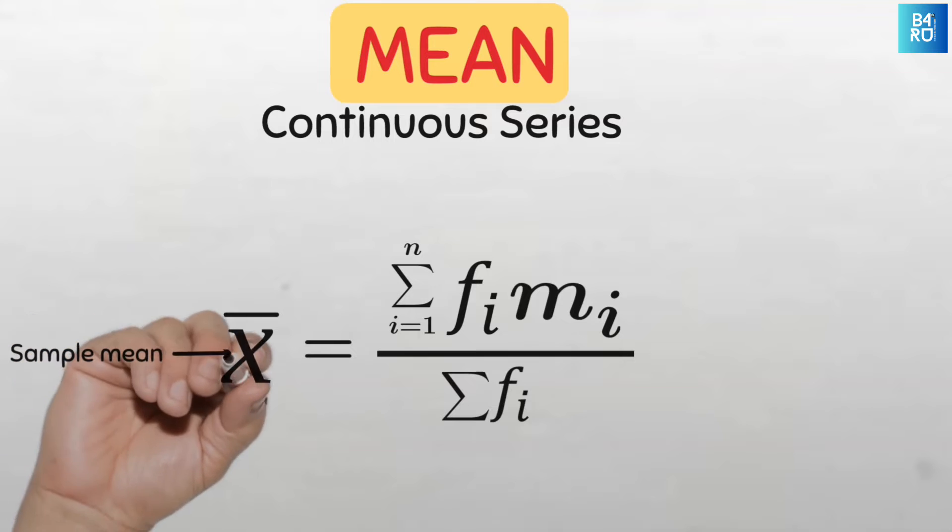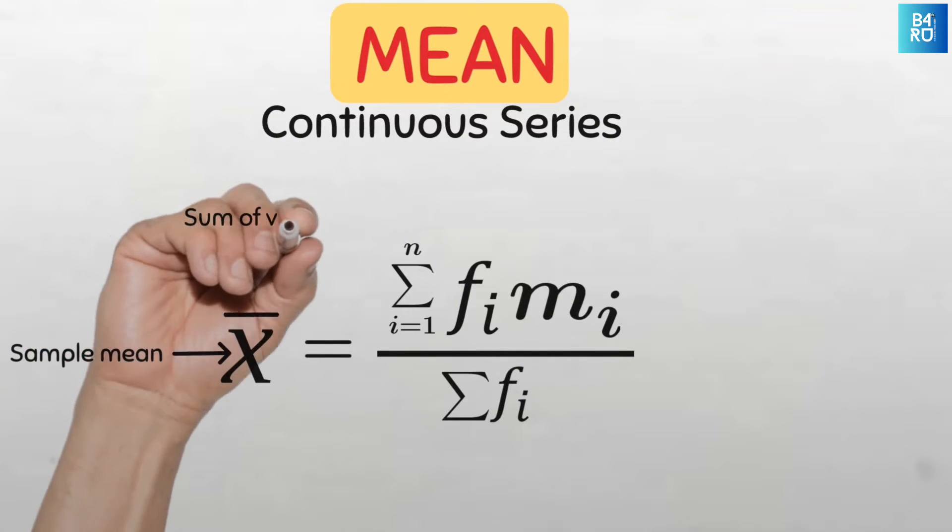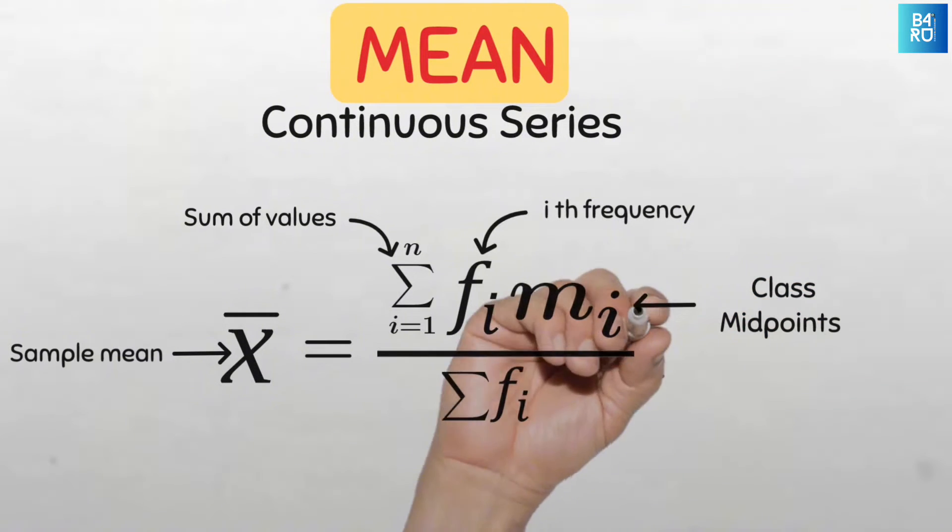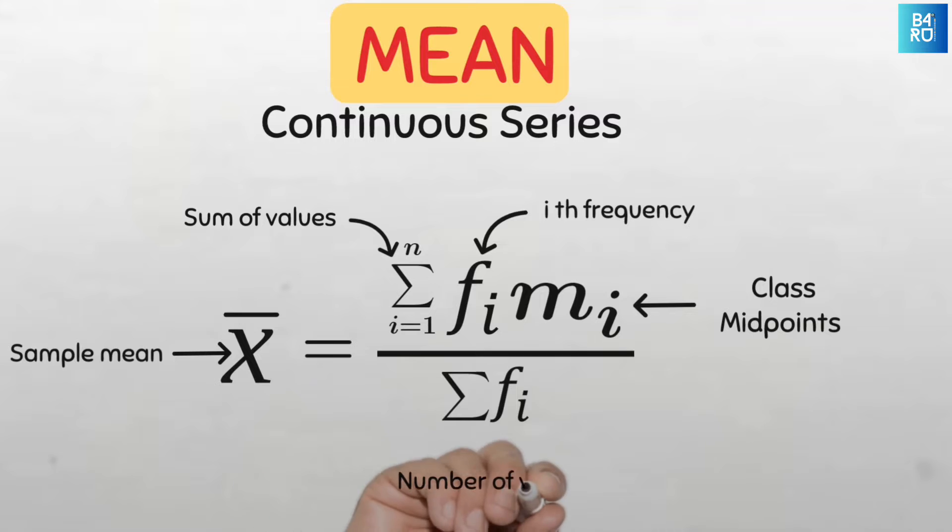x̄ is the symbol for the mean of the sample. Sigma i equals 1 to n is the sum of all values from first to last. f sub i is the value of the ith frequency, the frequencies of the classes. m sub i is the midpoint of the classes and sigma f sub i is the sum of all the frequencies which is the same as the sample size.